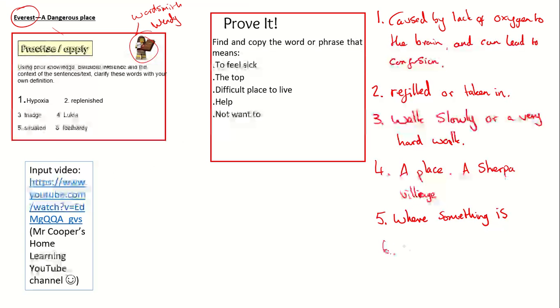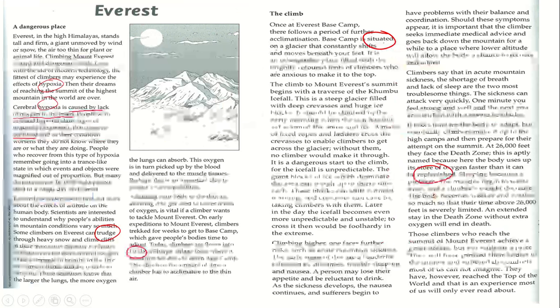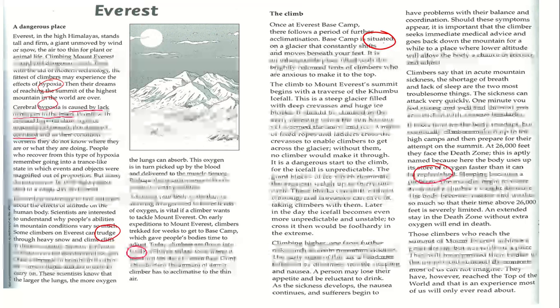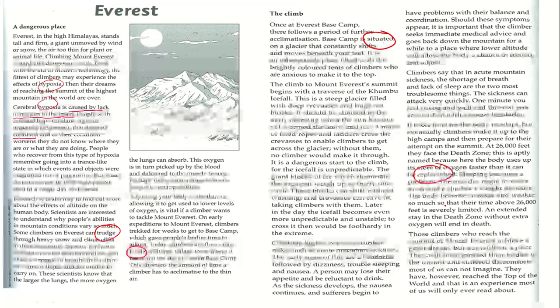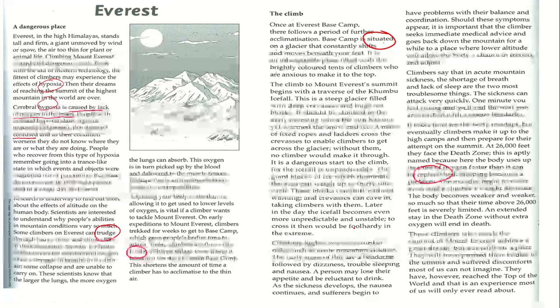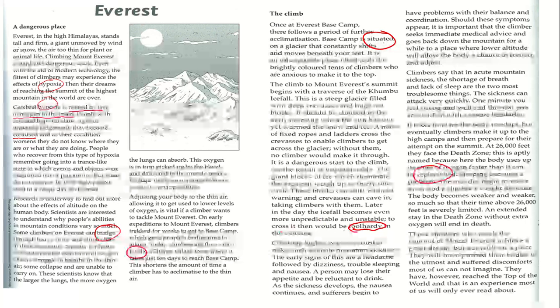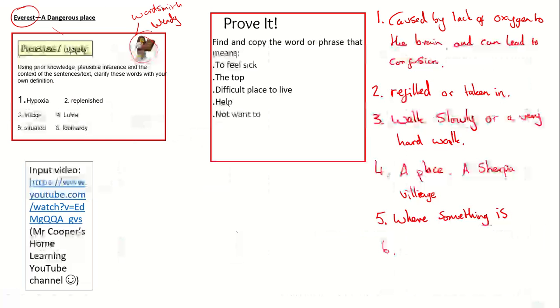And number six, Fool Hardy, which I see, I think is, I can't know where that is now. I feel like it was down in the bottom somewhere. But Fool Hardy, I think you can probably work out the meaning. Later in the day, the ice ball becomes even more unpredictable and unstable. To cross it then would be Fool Hardy in the extreme. I'm going to say that that means Foolish. I think Wordsmith Wendy can be hard because you've got to try and make your own definition for it, haven't you?